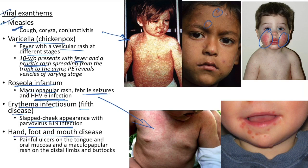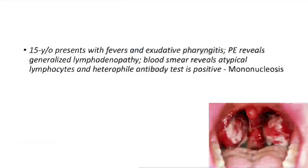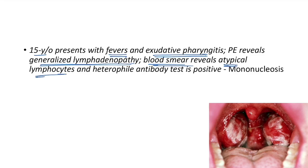Hand, foot, and mouth disease: painful ulcers on the tongue and oral mucosa, and a maculopapular rash on distal limbs and buttocks. Clinical case: 15-year-old presents with fevers and exudative pharyngitis. Physical examination reveals generalized lymphadenopathy. Blood smear reveals atypical lymphocytes and heterophile antibody test is positive — mononucleosis caused by Epstein-Barr virus.